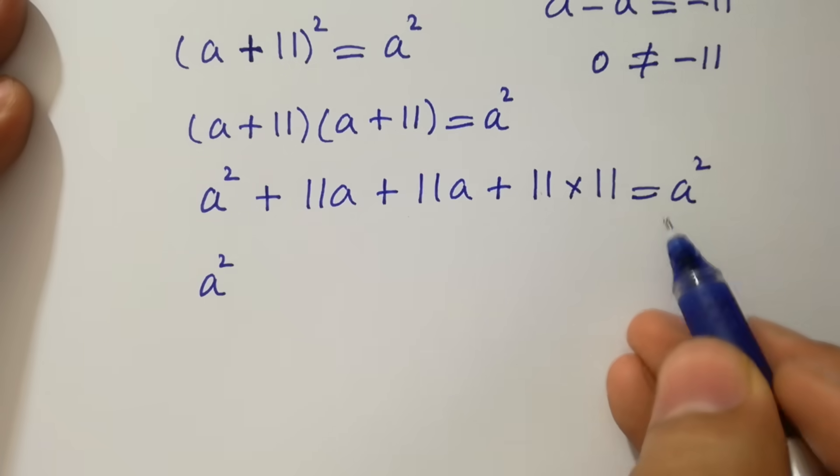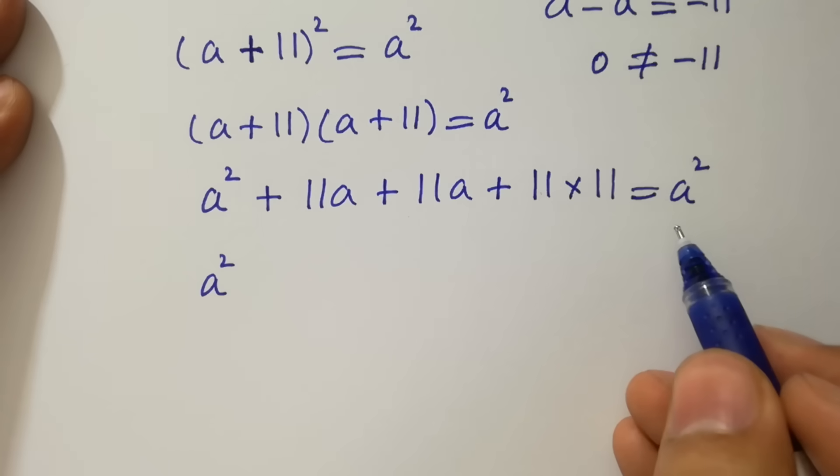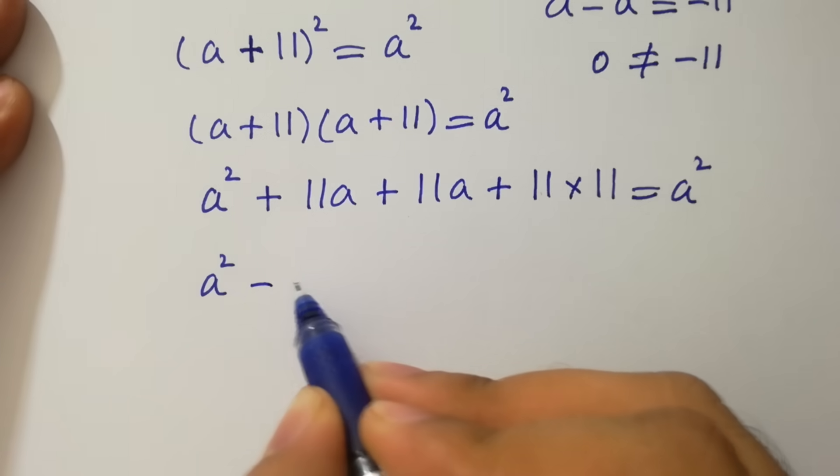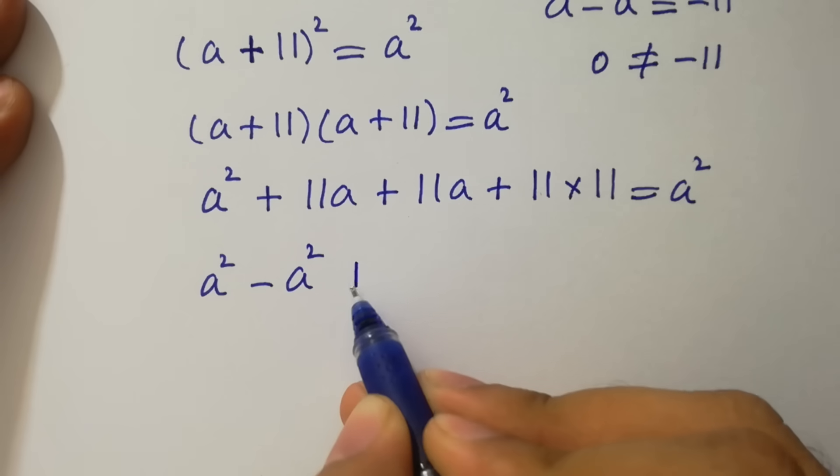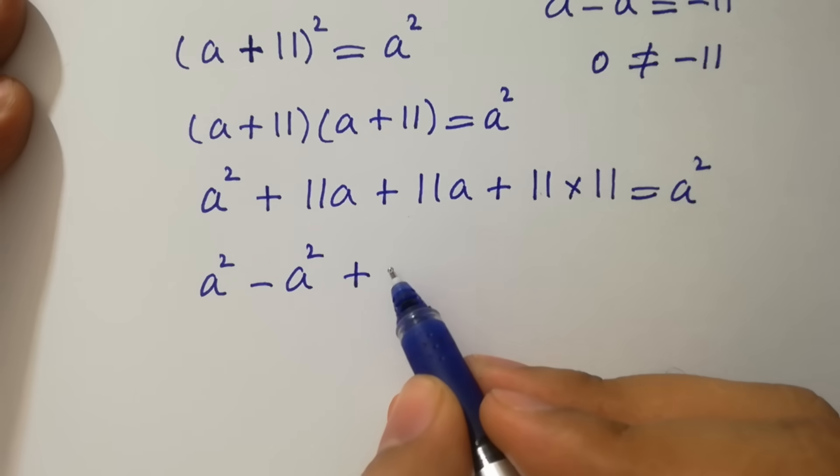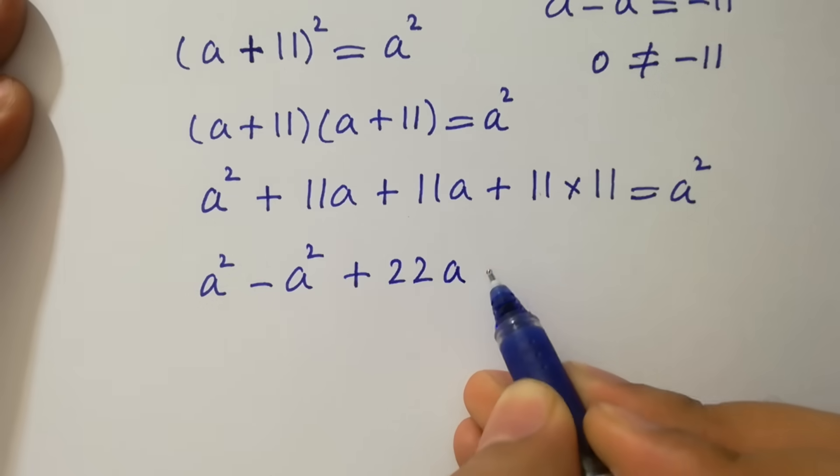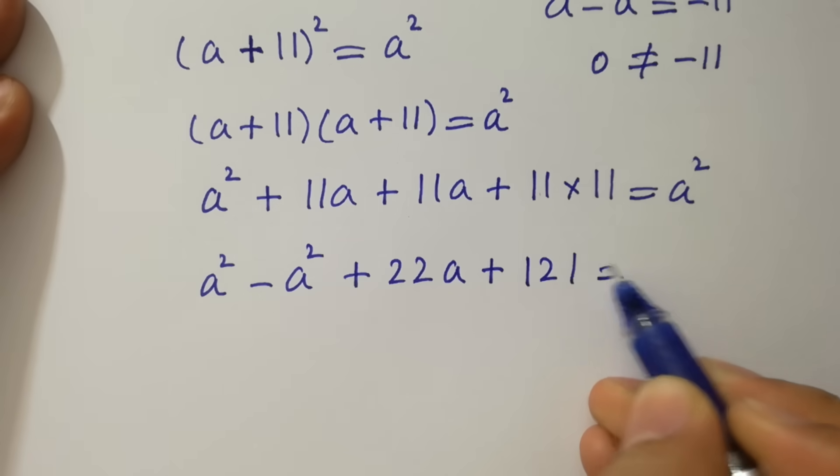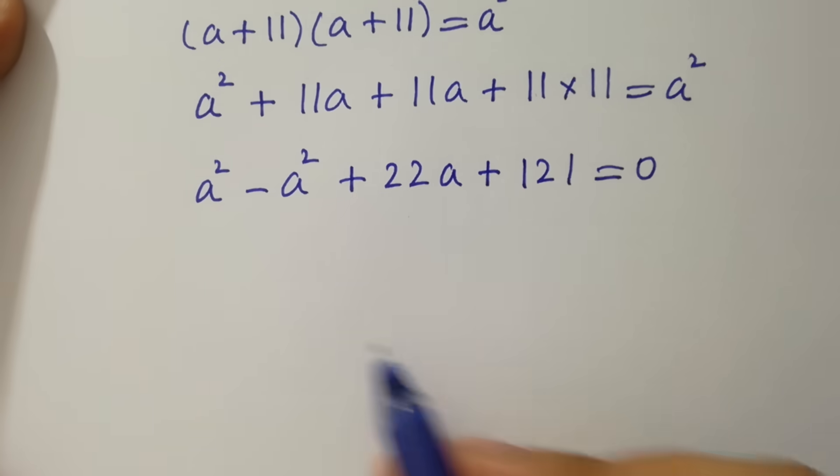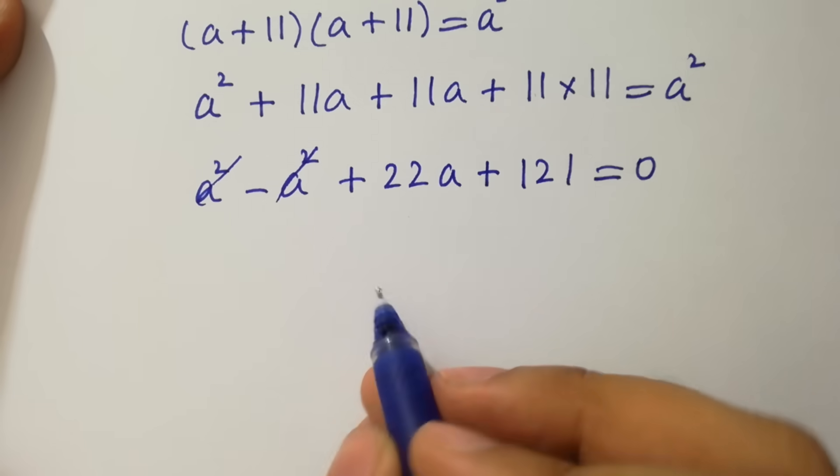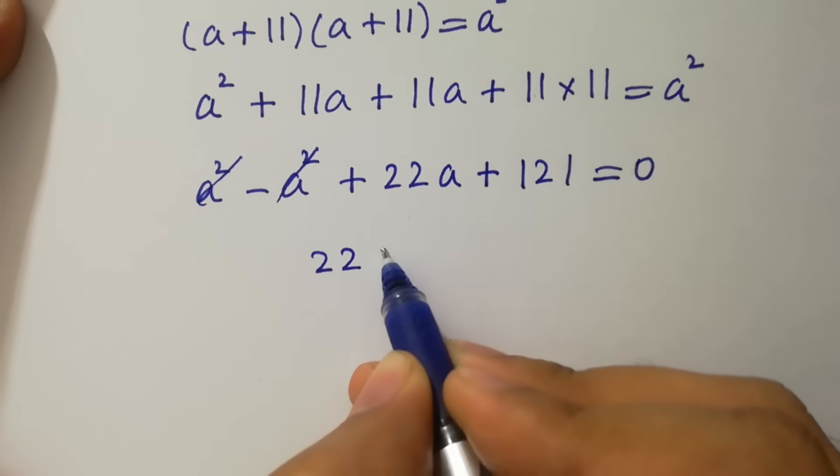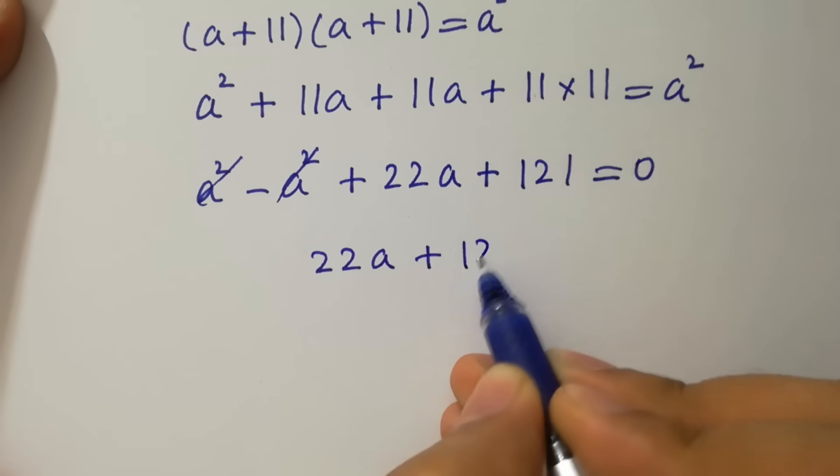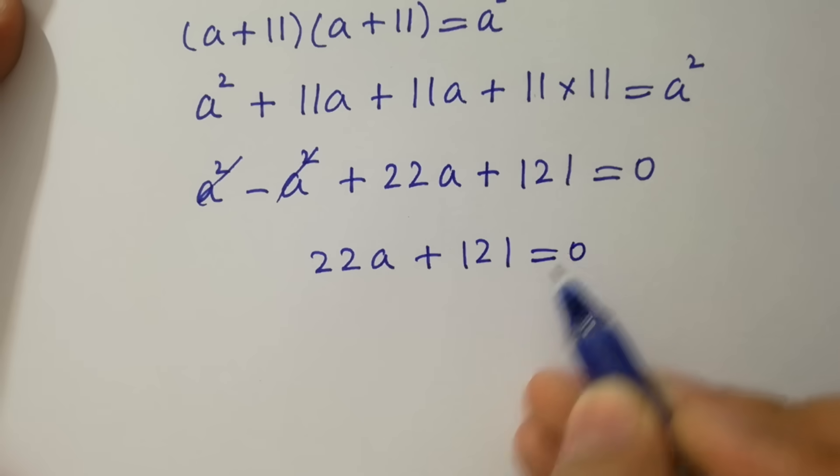A square on left hand side will be minus a square plus 11a plus 11a will be 22a plus 11 times 11 is 121 equal to 0. Where a square cancels, we have 22a plus 121 equal to 0.